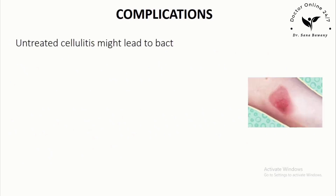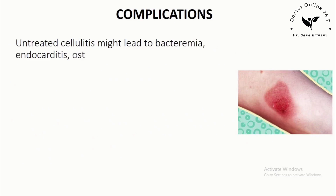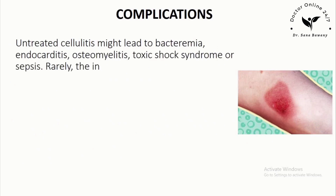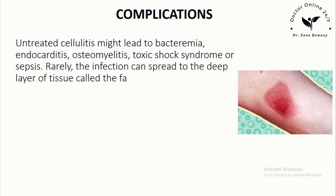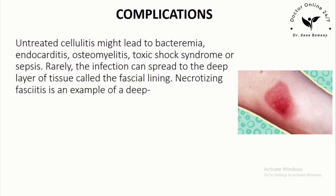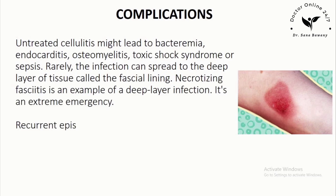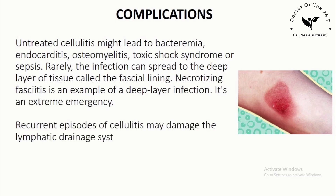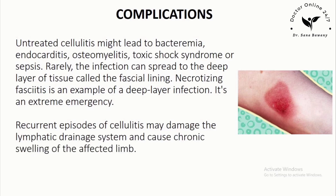Complications: Untreated cellulitis might lead to bacteremia, endocarditis, osteomyelitis, toxic shock syndrome, or sepsis. Rarely, the infection can spread to the deep layer of tissue called the fascial lining. Necrotizing fasciitis is an example of a deep layer infection and is an extreme emergency. Recurrent episodes of cellulitis may damage the lymphatic drainage system and cause chronic swelling of the affected limb.